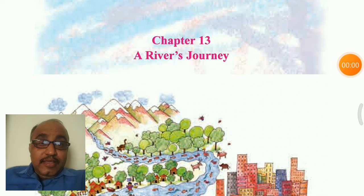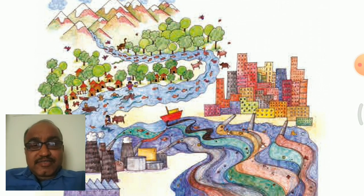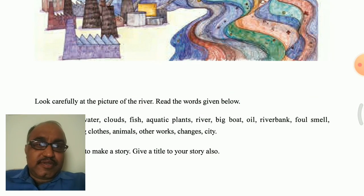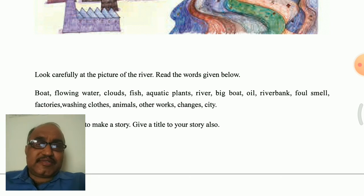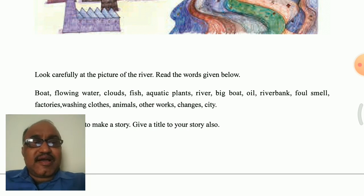Welcome to Lesson 13, a reverse journey. In the last session, we talked about how the river is flowing from a mountain and forest area to the village, slowly flowing. Water, fish, aquatic plants, river banks, and factory wastes are added in it. People use it for washing clothes and other works as it passes through the city area.